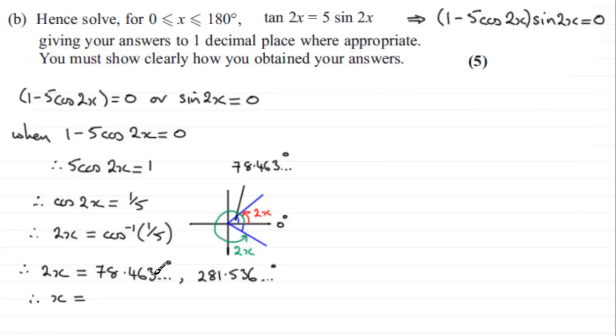So when I now divide by 2, divide this one by 2, you get 39.231... degrees. And if you divide this one by 2, you get 140.768... degrees. We're asked to give our answers to 1 decimal place where appropriate. Well, certainly appropriate here for these two answers. So we can say that therefore x = 39.2° to 1 decimal place, or for this one here, it's going to be 140.8° to 1 decimal place. So that's how I would solve 1 - 5cos 2x = 0.